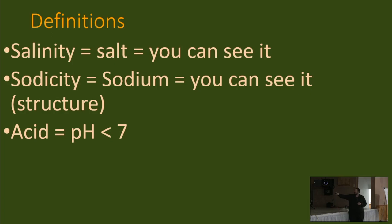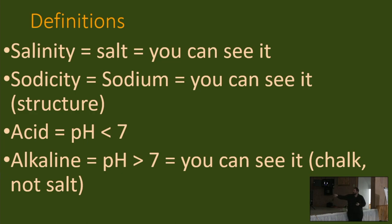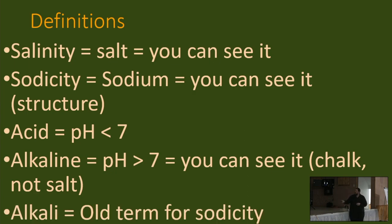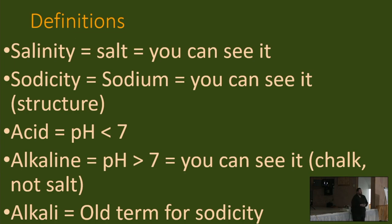Acid soils have a pH less than 7. We don't get concerned about soil acidity unless that pH gets to about 5.5 or less. Once it starts getting below 6, it's time to start thinking about addressing that issue. Alkalinity or alkaline means pH is greater than 7 — sometimes you can see that if you have a lot of carbonates in the soil, though that's usually in the subsoil. Alkali is a more archaic term that soil scientists use to describe sodic soils, or sodium-impacted soils.